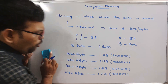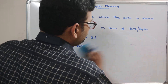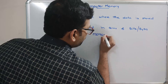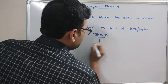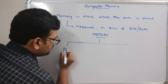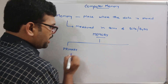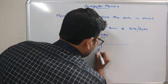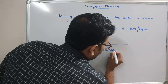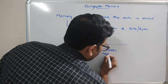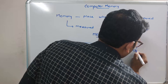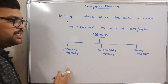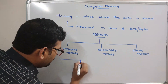Now, how many types of memory are there? Memory can be divided into three categories: primary memory, secondary memory, and cache memory. Primary memory is further divided into two categories: RAM and ROM.